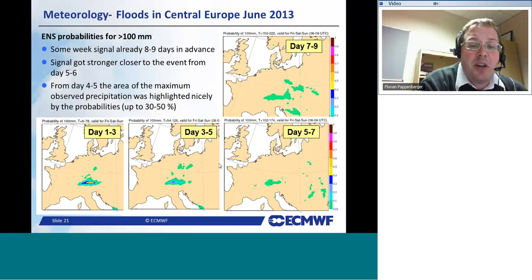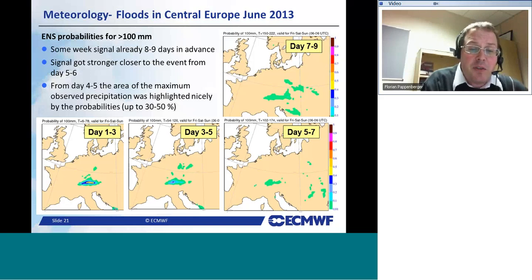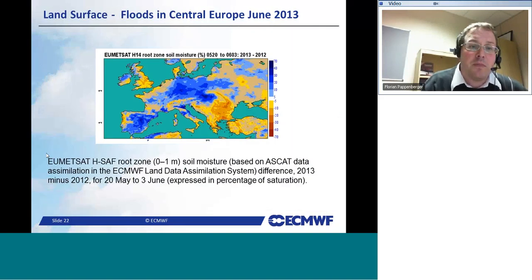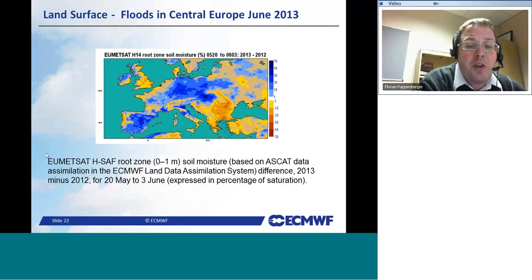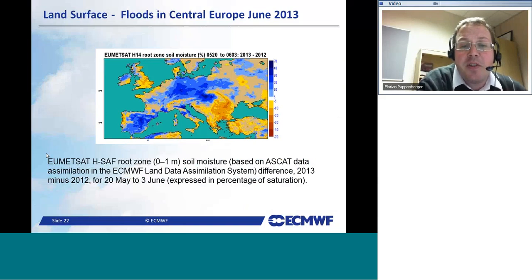Just to demonstrate that the soil was indeed very wet: here we have the H-SAF product, the root-zone soil moisture from EUMETSAT and ASCAT, all produced at ECMWF. This shows the distance from 2013 to 2012 for that period as a percentage of saturation. Everything in blue is extremely saturated, and you can see the soils were indeed extremely wet — we could observe this from satellites. So we saw it in the meteorological forecast, in the precipitation forecast, in forecasts more tuned to hydrologists, and in our Extreme Forecast Index.